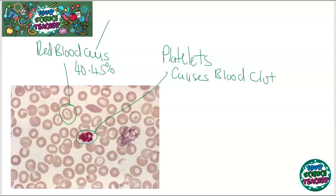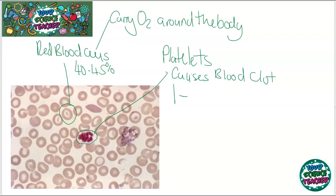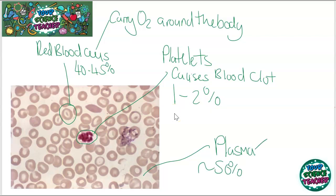The job of red blood cells is to carry oxygen around the body. The platelets only account for about 1% to 2% of blood — they don't need that much in the blood. The vast majority of blood is actually plasma, and if you look, there's lots of spacing and gaps between the red blood cells. That's because they're carried around in plasma, which accounts for around 50% of all the blood. The role of plasma is to transport the red blood cells and also to get rid of substances you do not want in the blood.